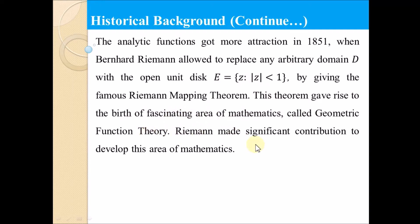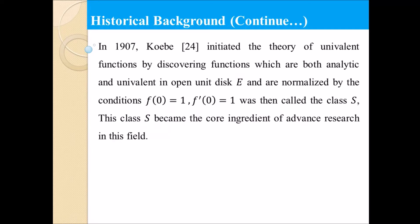This theorem gave rise to the birth of a fascinating area of mathematics called Geometric Function Theory. So Riemann made a significant contribution to developing this area of mathematics. In 1907, Koebe initiated the theory of univalent functions by discovering functions which are both analytic and univalent in the open unit disk E, normalized by the conditions f(0) = 0 and f'(0) = 1. This normalization was then called class S. Class S became the core ingredient of advanced research in this field. A univalent function is a function that is analytic, univalent, and normalized.